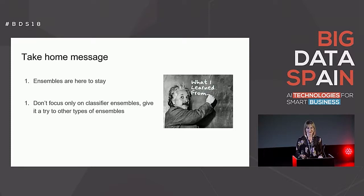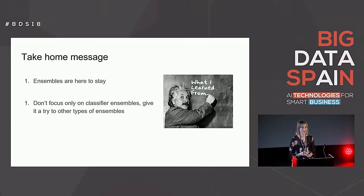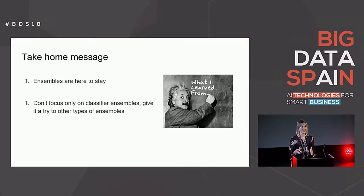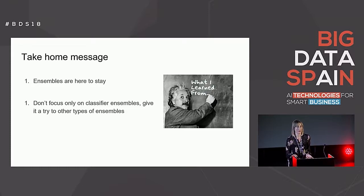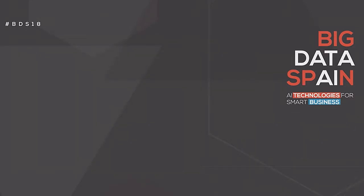So my take-home messages: first, ensembles are here to stay — they are successful and likely to continue to be, so try them in your problems. Second, don't focus only on classifier ensembles. I showed you how to adapt the ensemble philosophy to feature selection, but it can be adapted to any other machine learning field. If you have a problem, just give it a try and use an ensemble to see if it improves. Thank you very much. If you have any questions, I'll be happy to answer.